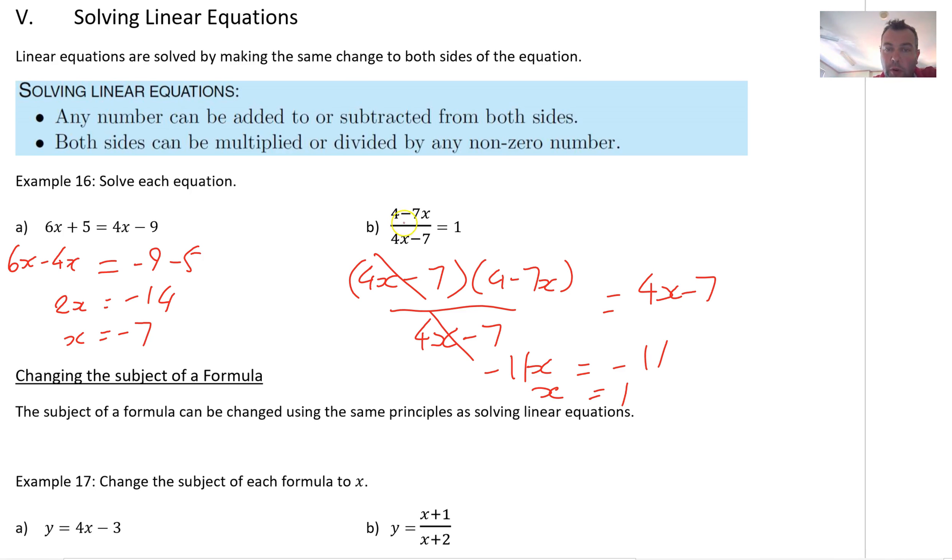Would that be true? 4 minus 7 is minus 3 over 4 minus 7 minus 3. That equals 1. All good? Not the neatest working in the world, but anyway, that's where we get.